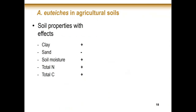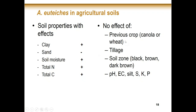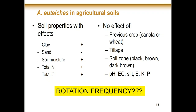Looking at soil properties correlated with disease, we found a positive correlation with clay, soil moisture, total nitrogen, and total carbon — likely because diseased plants aren't using those nutrients, so they get left behind and appear higher. Interestingly, we saw no effect of previous crop, which was primarily canola or wheat, no effect of tillage, and no effect of soil zone. Even though soil moisture was correlated, soil zone was not. It was also impossible to pull out data on rotation frequency and how that affected Aphanomyces levels, because it was hard to get a complete historical dataset going back far enough.